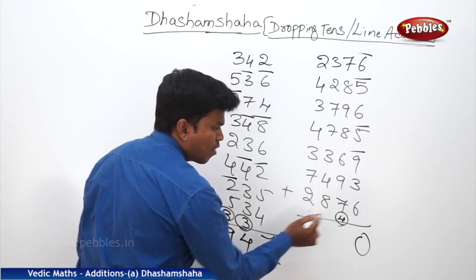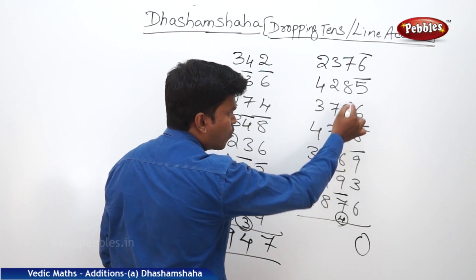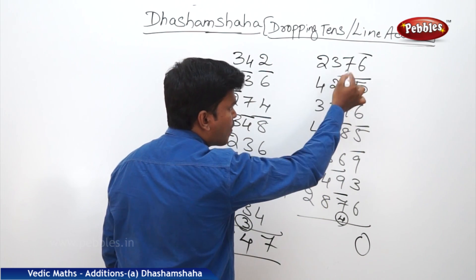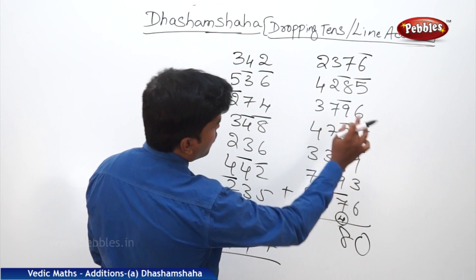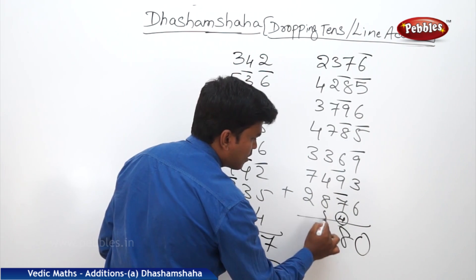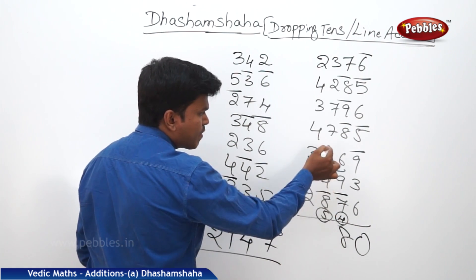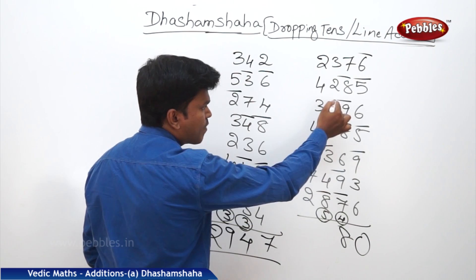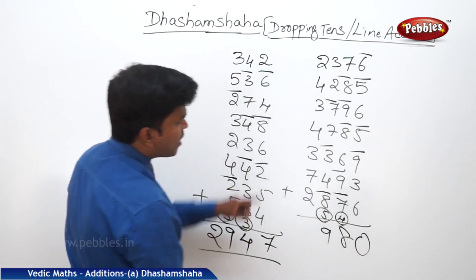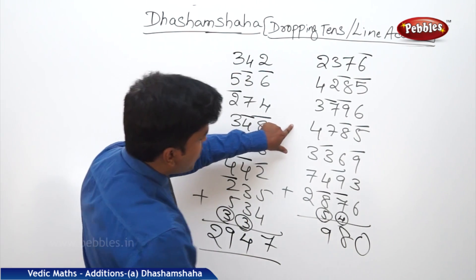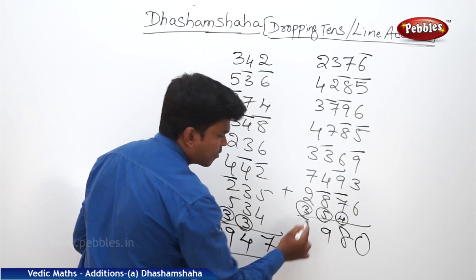Second line: 4, 7 → 1 (drop 10). 1, 9 → 0 (drop 10). Start freshly. 6, 8 → 4 (drop 10). 4, 9 → 3 (drop 10). 3, 8 → 1 (drop 10). 1, 7 → 8. How many 10s? 5 tens. Carry to next line. Third line: 5, 8 → 3 (drop 10). 3, 4 → 7. 7, 3 → 0 (drop 10). Start freshly. 7, 7 → 4 (drop 10). 4, 2 → 6. 6, 3 → 9. How many 10s? 3 tens. Carry.